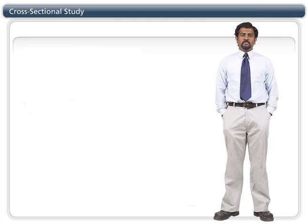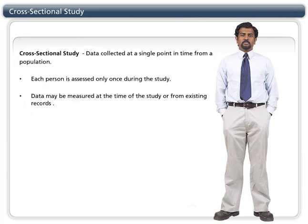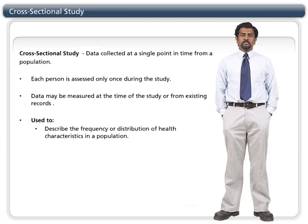In a cross-sectional design, data is collected at one point in time and each person is assessed only once. The information gathered can include disease outcomes, risk factors, demographics, and a variety of other information types. It is used for describing the frequency of health characteristics in a population as well as determining relationships between characteristics and other variables.